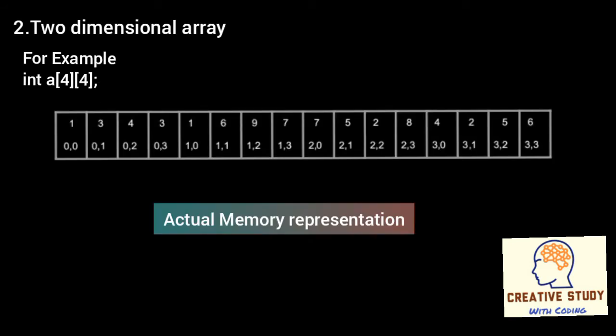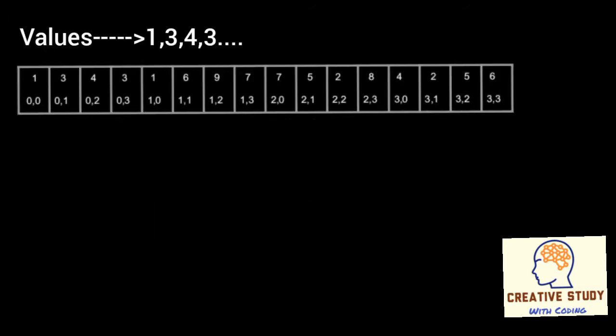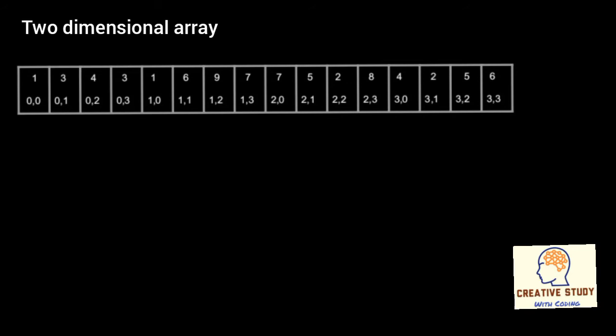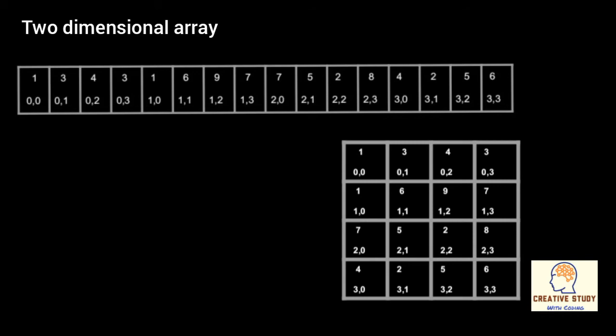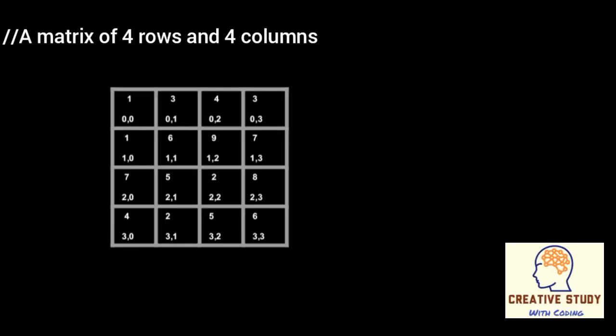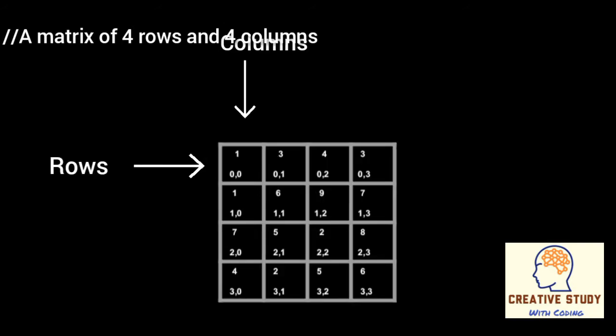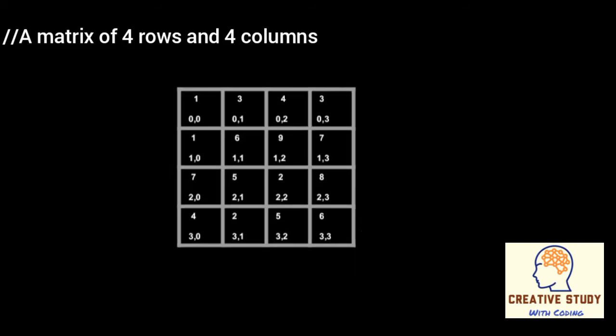This is the actual memory representation where values are stored at their indices — these are called values and these are called indices. The two-dimensional array in C programming is also known as a matrix. A matrix can be represented as a table of rows and columns, and you can visualize a two-dimensional array easily by showing it in matrix form.